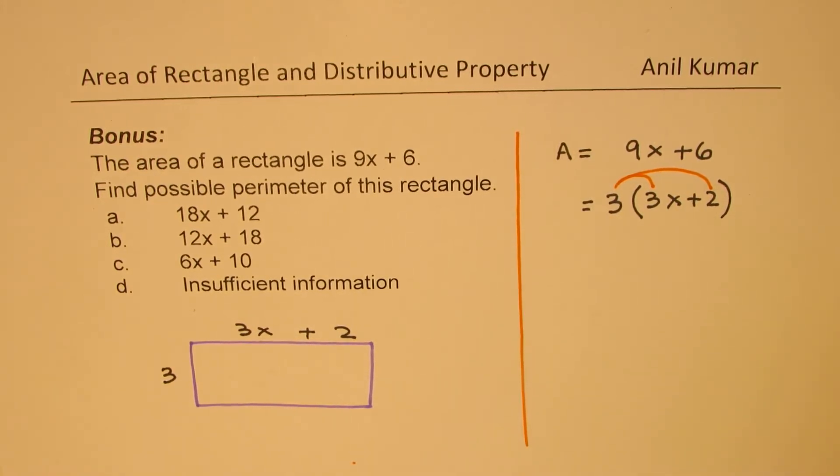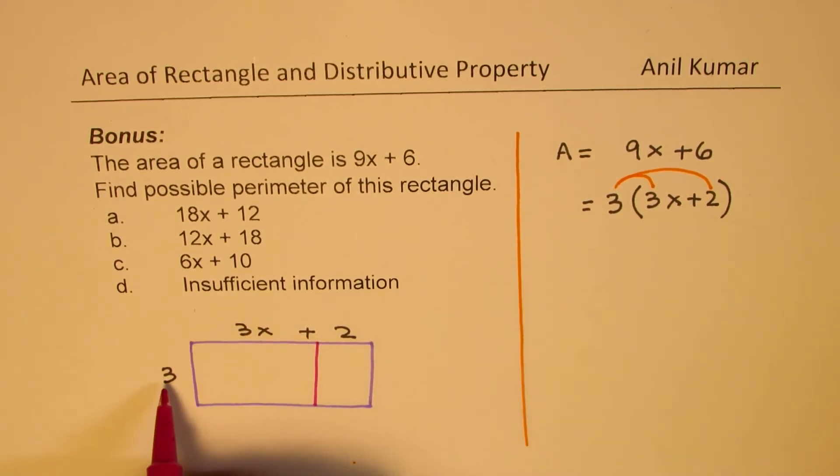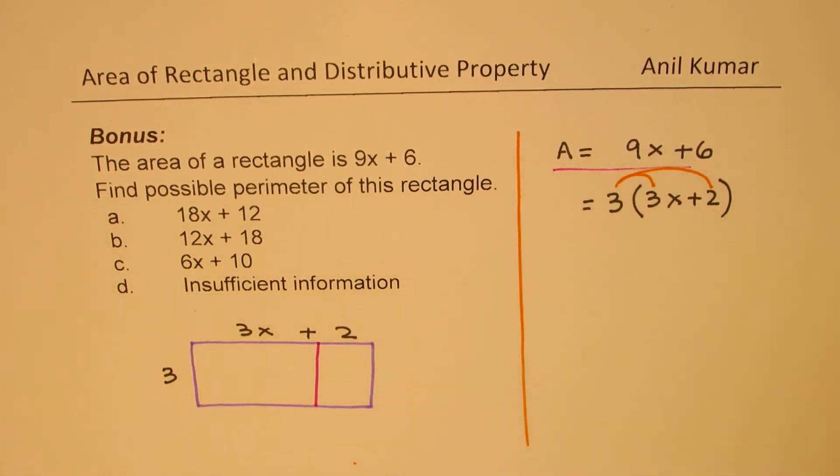So what I'm saying is that this particular rectangle whose sides are 3 as the width and 3x + 2 as the length gives the same area as in the question. We could split this.